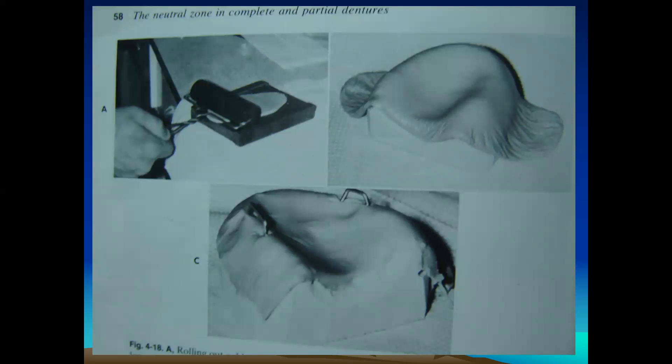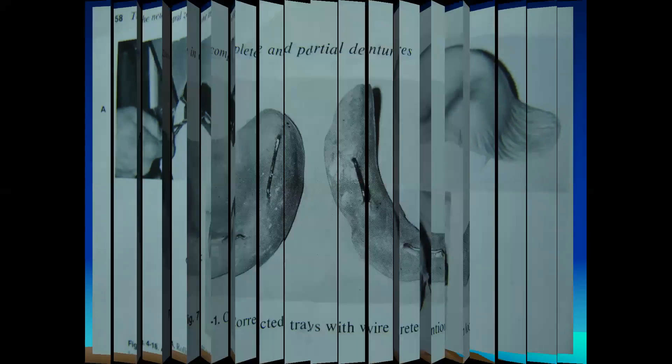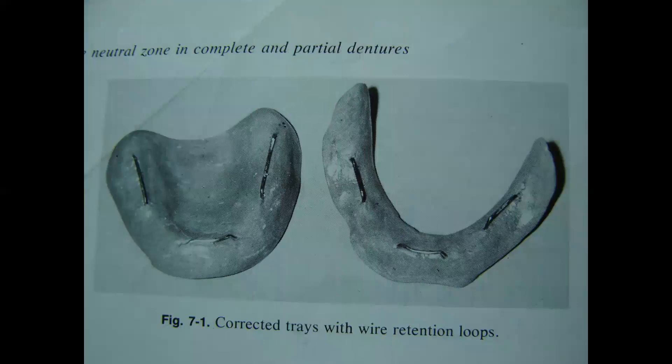In this diagram we can see the fabrication of the record base, and in the bottom diagram we can see the retentive loops. These are the final trays with retentive loops in place.